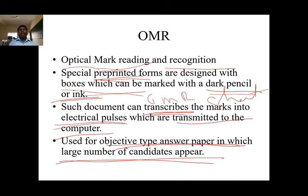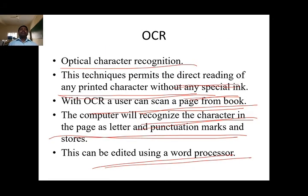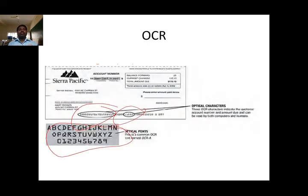There are two components: the OMR sheet and the OMR reader. It is used for objective type answers where large numbers of candidates appear. For OCR, this technique permits reading of any printed character. The computer recognizes characters in a page as letters, numbers, and punctuation and stores them into the system. This can be edited using a word processor. For MICR, it is widely used in banks to process checks. The check can be read using a special input unit called an MICR reader. Human readable numbers are printed on the check with special magnetic ink, which eliminates manual errors and provides security.